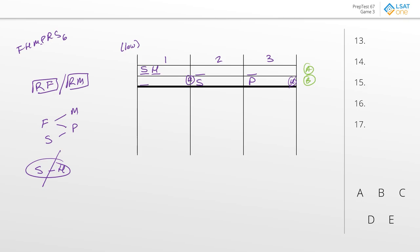It looks like we don't have an exclusion question here — we go straight into a local question. Remember, you always do the first question first, because even if it's not an explicit exclusion question, it usually still plays the same role. The question asks: if aisle one has only hobbies — that's a very specific restriction — that means we cannot be working in template A because aisle one is not only H. So if we only have H in aisle one, we'll have to be in template B.